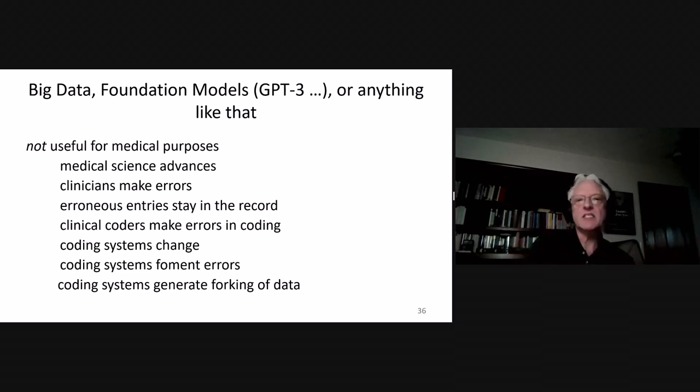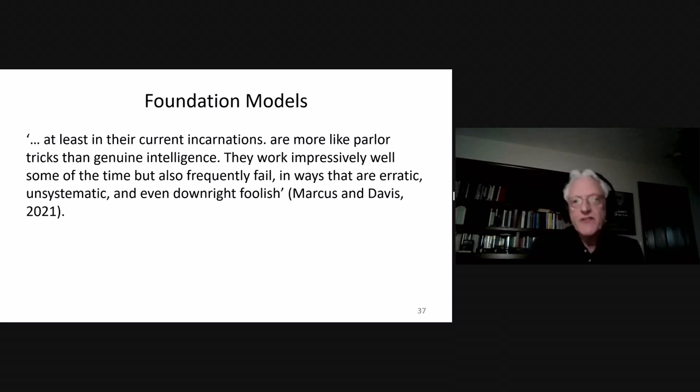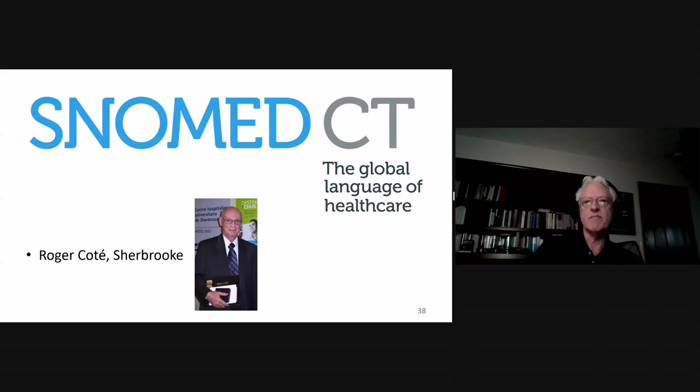Worst of all, the coding systems change. This is good because medical science advances, but the coding systems should change gracefully. They should change in such a way that changes can be fed back to filter out the consequences of older systems which have been shown to be no longer scientifically coherent. Even worse, coding systems themselves ferment errors because some of the coding systems are badly built. Coding systems generate forking. This is a quote from Gary. Foundation models are more like parlor tricks than genuine intelligence. Unfortunately, the problems in medicine don't even yield the parlor tricks. They're just errors of a very messy sort.